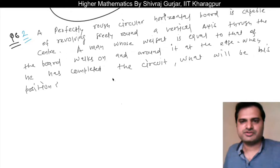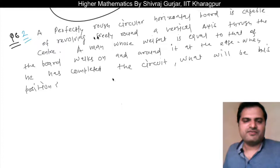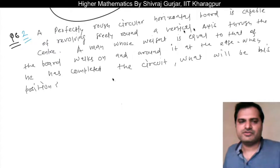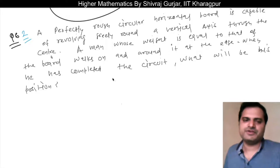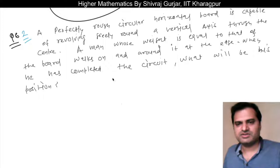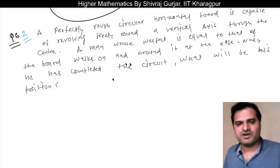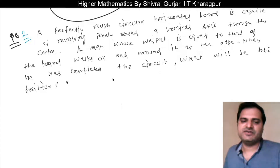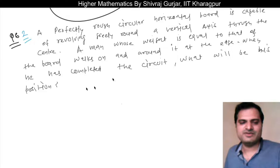Let us do this question. A perfectly rough circular horizontal board is capable of revolving freely round a vertical axis through the center. A man whose weight is equal to that of the board walks on and around it at the edge. When he has completed the circuit, what will be his position?